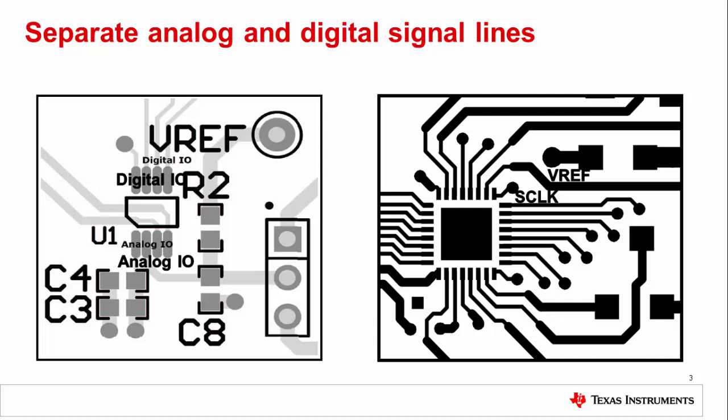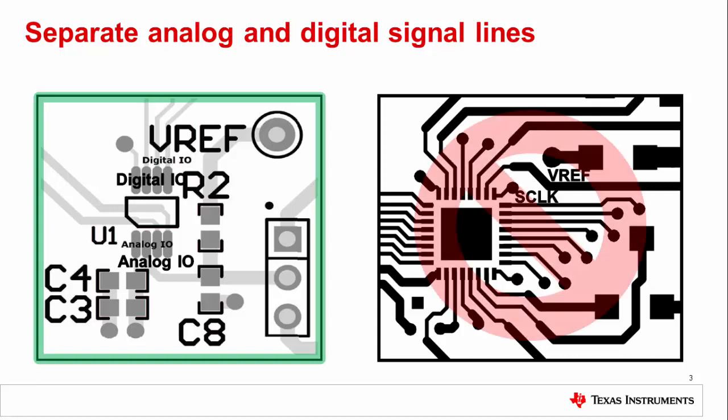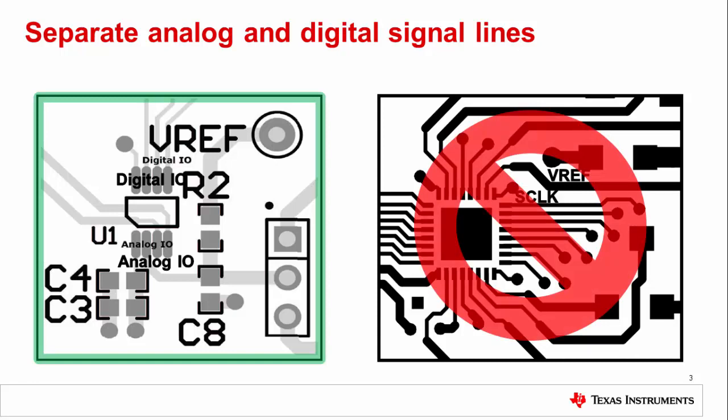The example on the left keeps the digital signals away from the analog signals, which is a great start. The example on the right, however, has the V-Ref traveling parallel to the S-Clock line. This can cause very large amounts of coupling, so try to stay away from this. Remember, mitigation of digital feed-through starts with the layout.